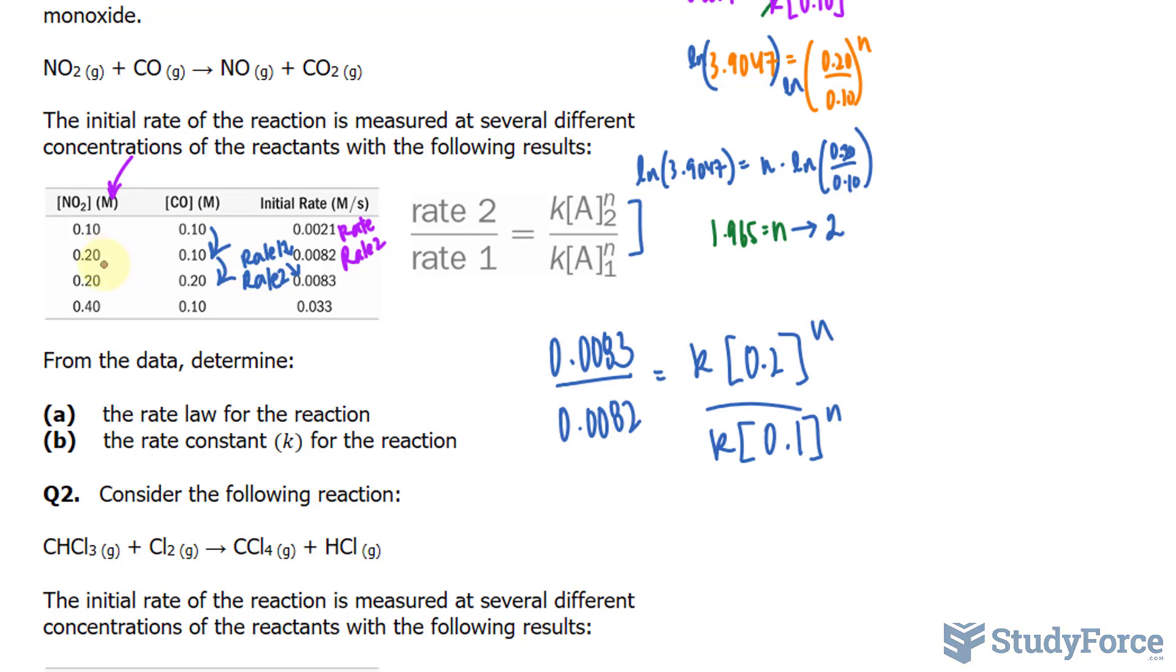Another reason why this is a good selection is because during this change, nitrogen dioxide didn't change. So you want to look out for that. You want to pick rates where there is not a change in the other specimen versus the one that you're looking at.